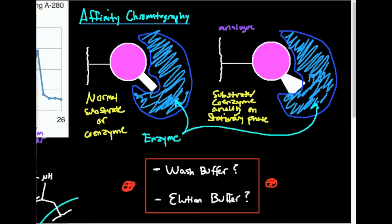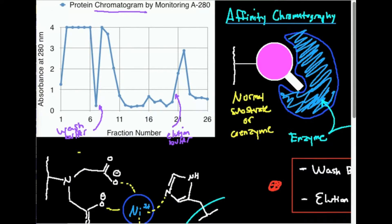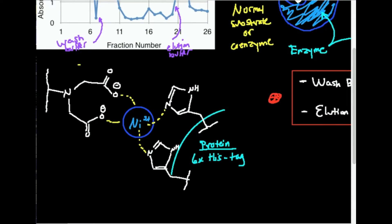So if you have proteins that like this molecule, they should stick onto it in the column and wouldn't be expected to elute very easily. But proteins that don't like this molecule — it's not their substrate — just fall through the column, and you would expect those to elute first. Any protein that likes this molecule and sticks onto it you would expect to elute last. And that's exactly what we observe. Let's look at a specific example of how affinity chromatography works at a molecular level.